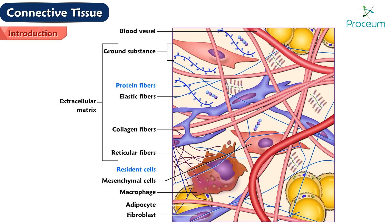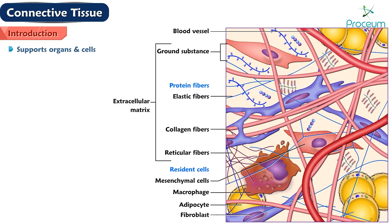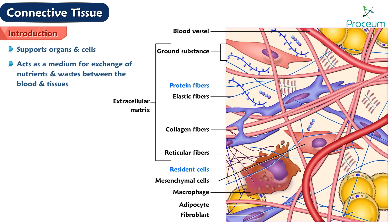Connective tissue is formed primarily of extracellular matrix, consisting of ground substance and fibers in which various connective tissue cells are embedded. Connective tissue supports organs and cells, acts as a medium for exchange of nutrients and wastes between the blood and tissues, protects against microorganisms, repairs damaged tissues, and stores fat.